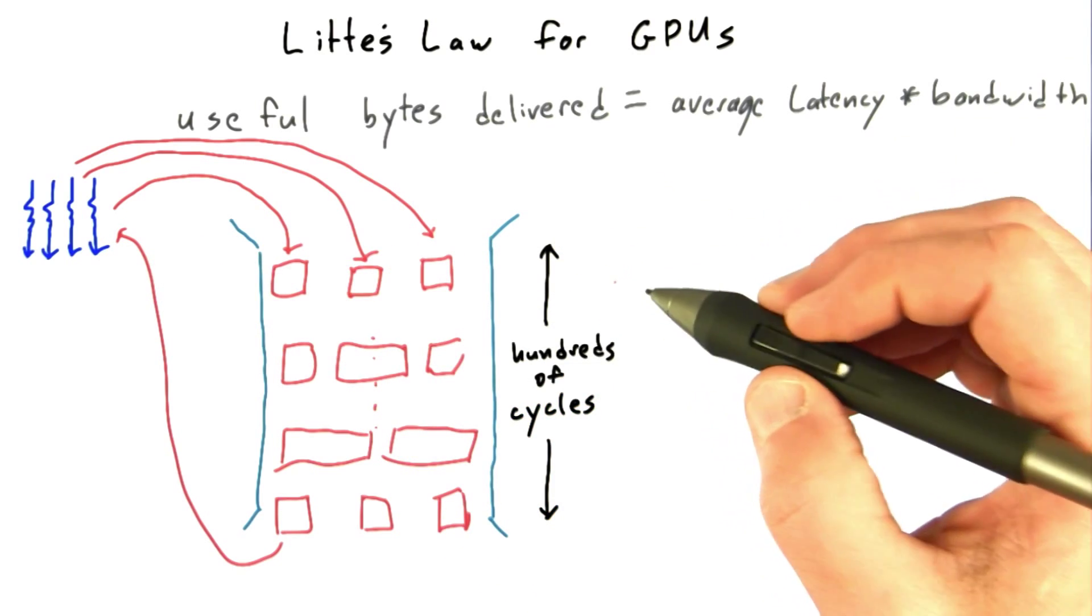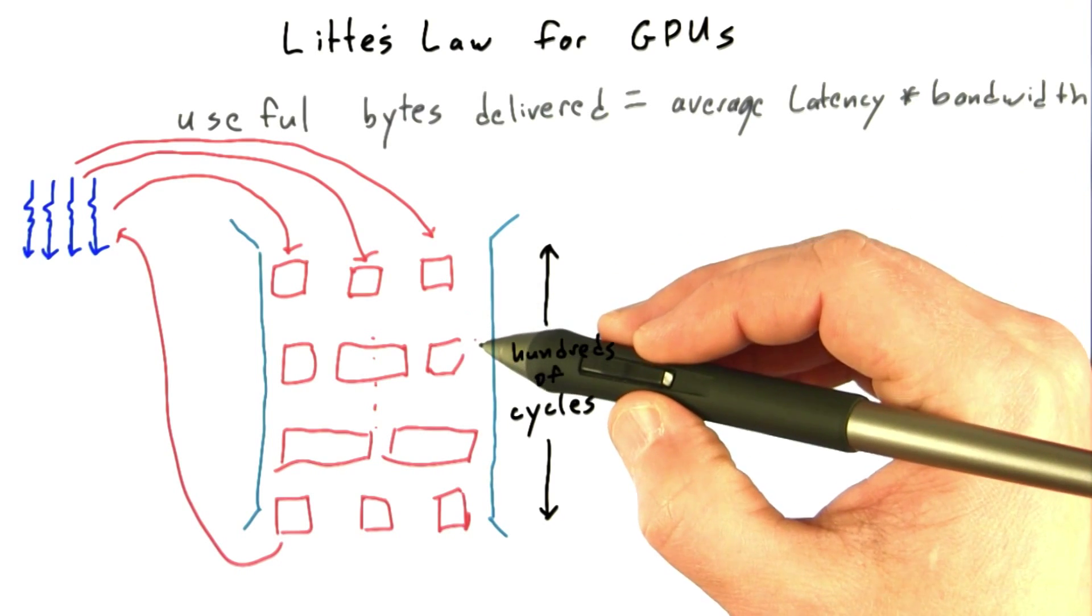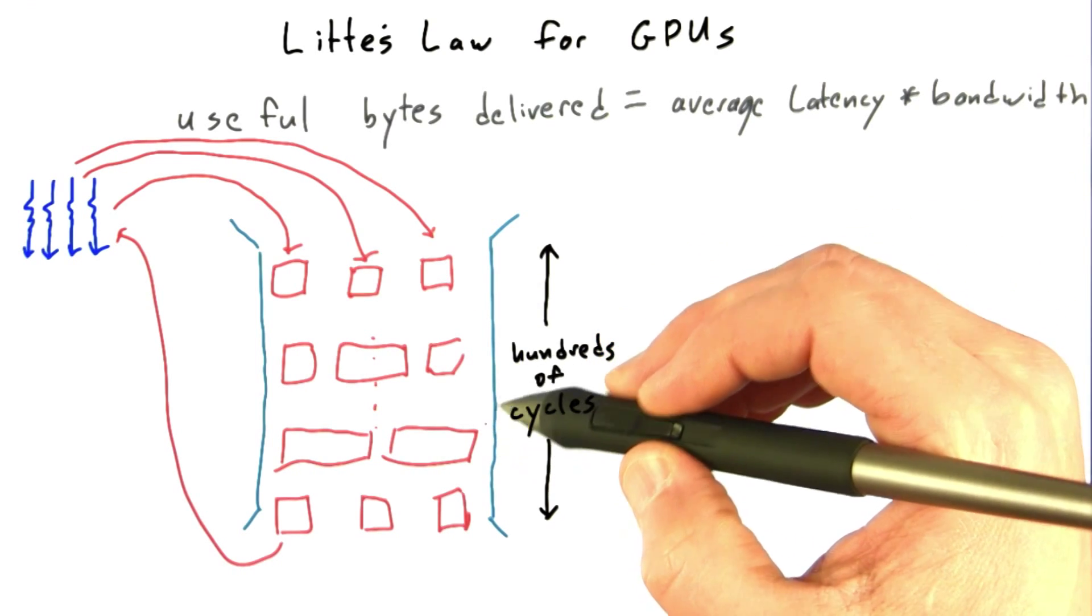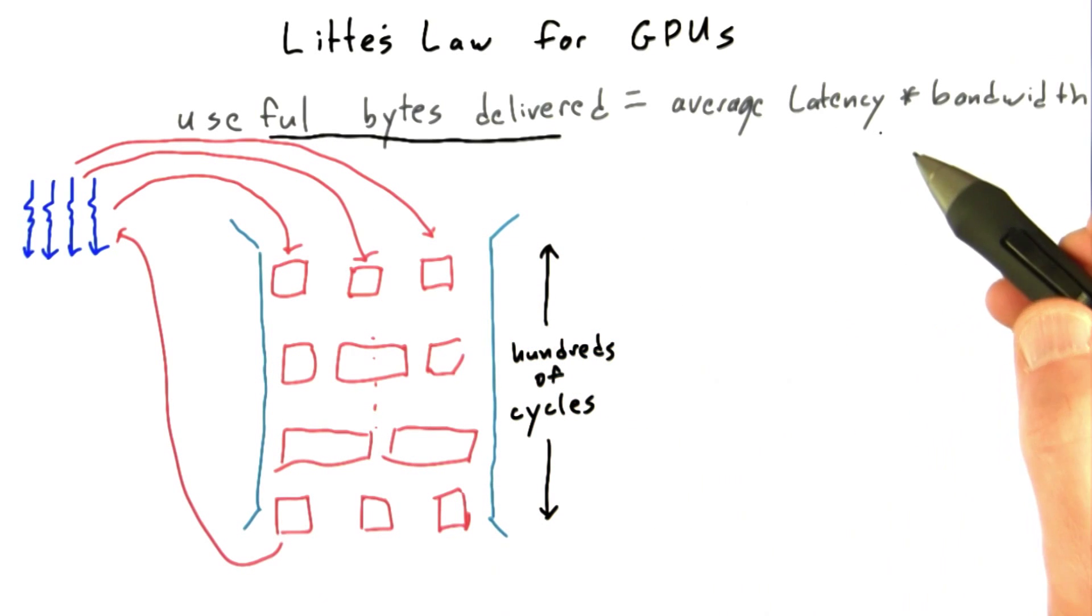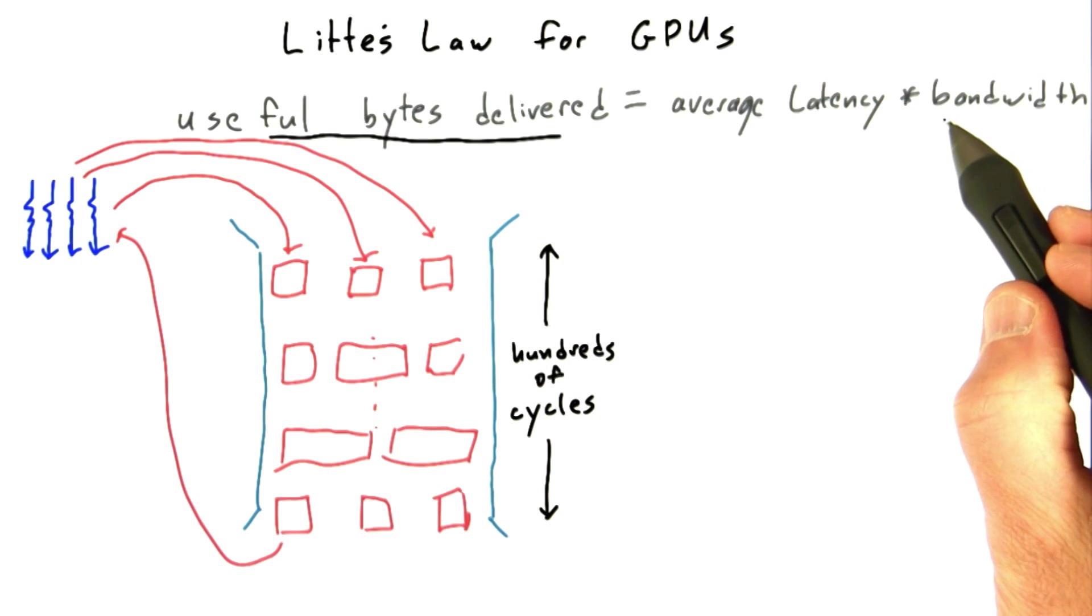So if we only have a few threads issuing transactions, the pipe is mostly empty, and not many bytes are being delivered. And Little's Law tells us that if not many bytes are being delivered, then our total bandwidth is going to suffer.